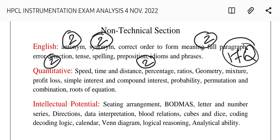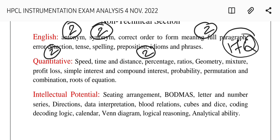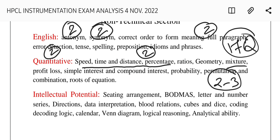For quantitative aptitude, questions were majorly from speed, time and distance, percentage, ratios, geometry, volume and area, mixtures, profit and loss, simple interest, compound interest, probability, permutation and combination, and roots of equations. Only two to three questions were asked from each domain.